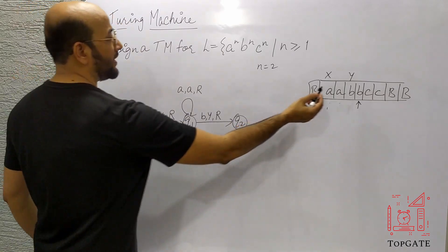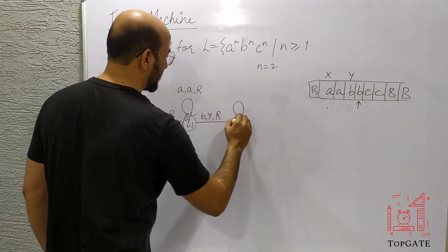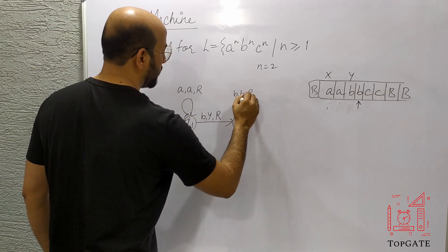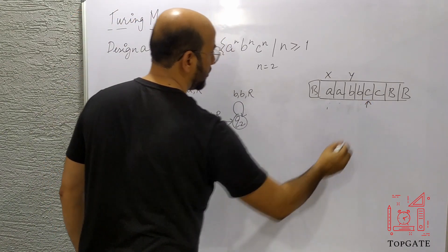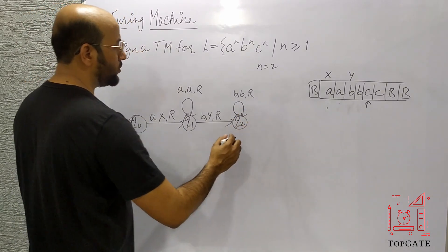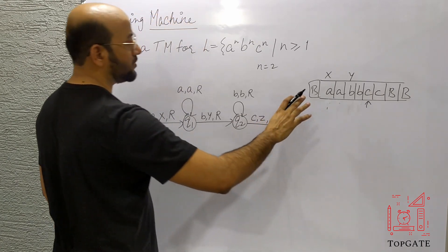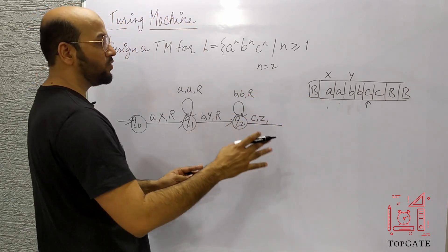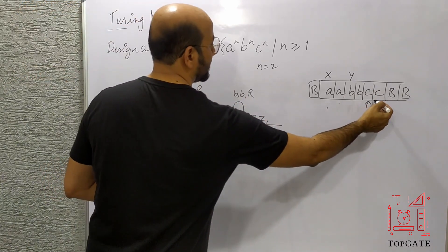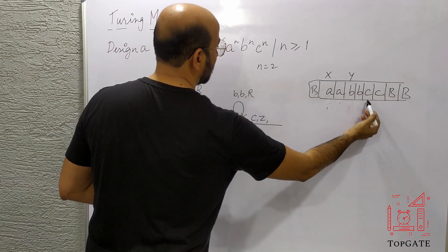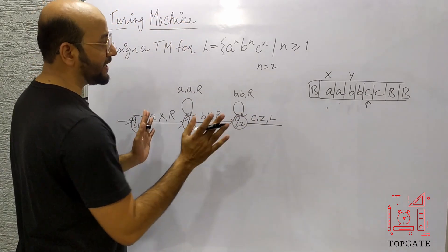At Q2 my work with this B is done, so I leave it as it is with a self-loop: B stays B and moves right. The pointer now points to the next C. This C should be changed to Z since work with C is done. Then I should not go right — I go left, back toward the previous X, completing one cycle.